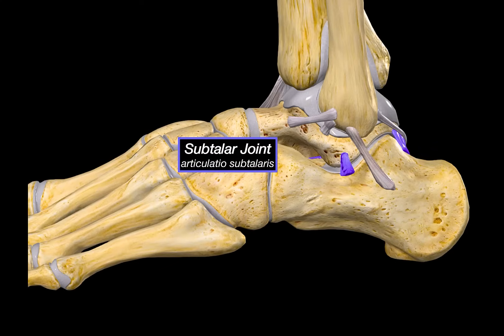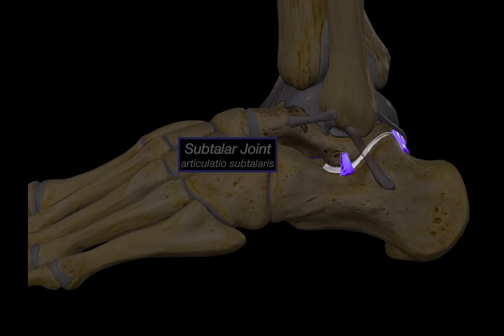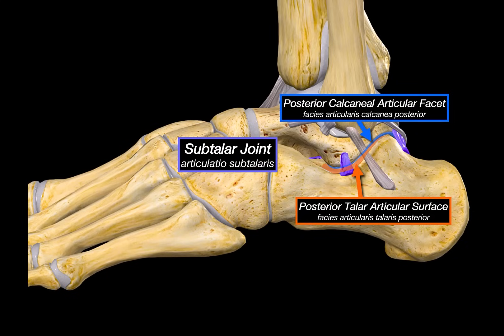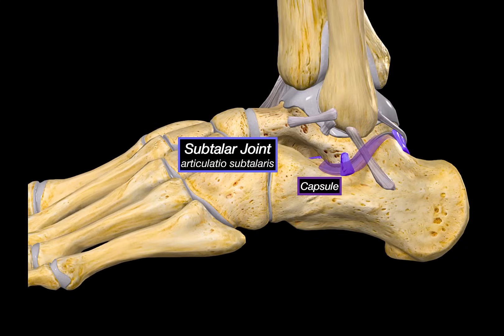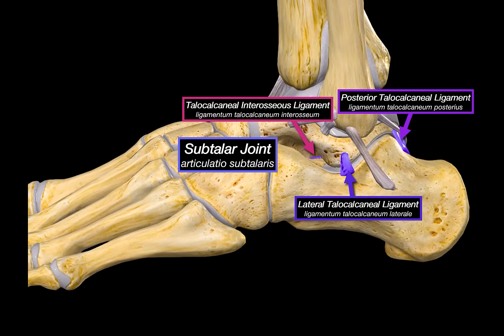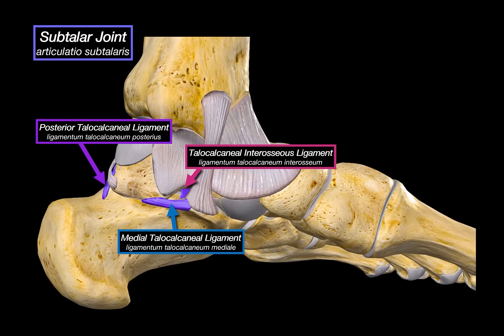The next joint is called the subtalar joint. As the name says, it's the joint just below the talus — an articulation between the posterior talar articular surface and the posterior calcaneal articular facet. They are enclosed by a capsule which wraps around just the posterior surfaces, sealing the joint and holding synovial fluid inside. The ligaments give this joint its real stability: the lateral talocalcaneal ligament, the posterior talocalcaneal ligament, the talocalcaneal interosseous ligament sitting in the tarsal sinus between the talus and calcaneus — a super strong stabilizer — and on the medial side, the medial talocalcaneal ligament.